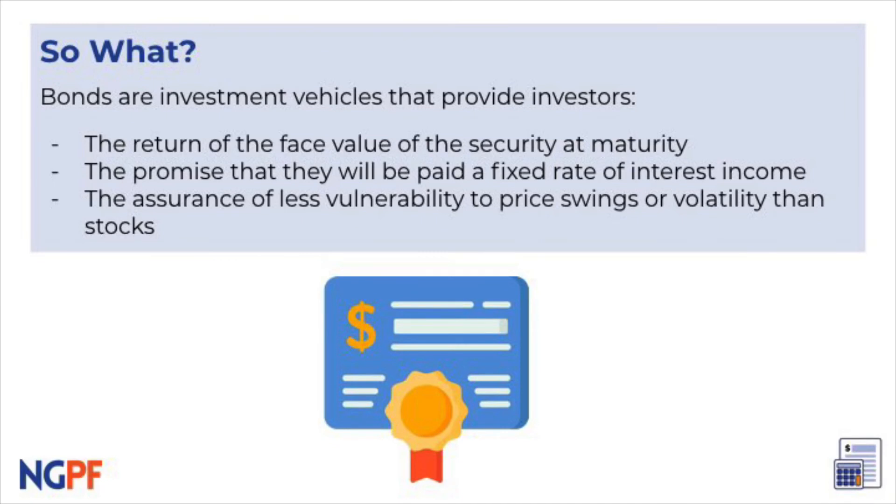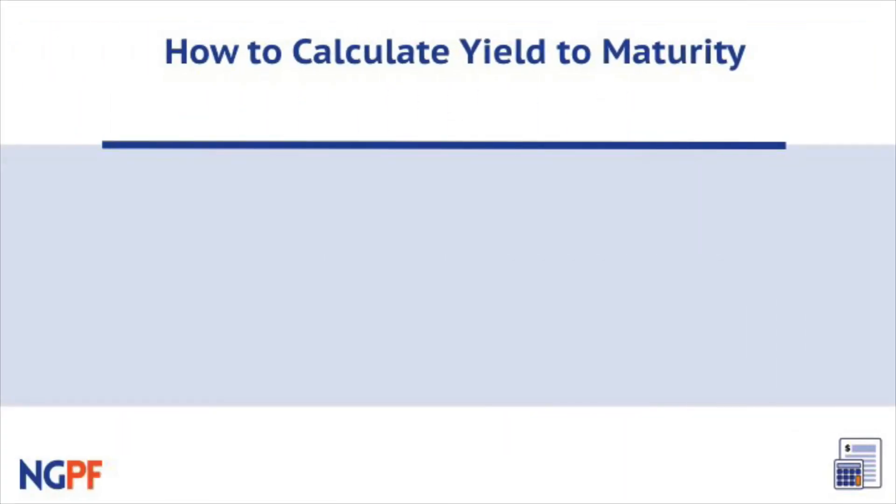Let's review how to calculate yield to maturity. First, identify your variables, including your coupon rate, face value, price, and years until maturity.